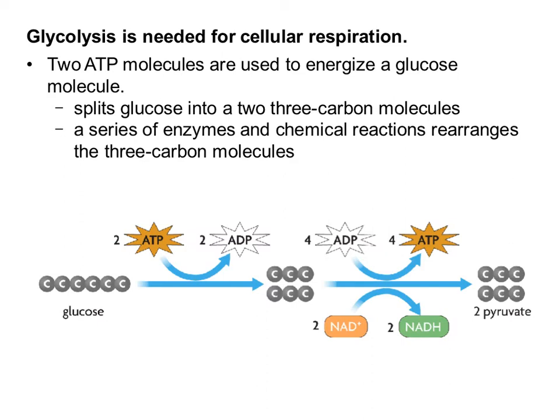The first step of glycolysis is to split the glucose into two three-carbon molecules — not the pyruvate, these are actually something different. Glycolysis itself is actually several steps long, about 12 steps, so we are looking at a pretty simplified version. The first thing that's going to happen is that we're actually going to spend two ATP molecules, and that's going to allow this first step to occur.